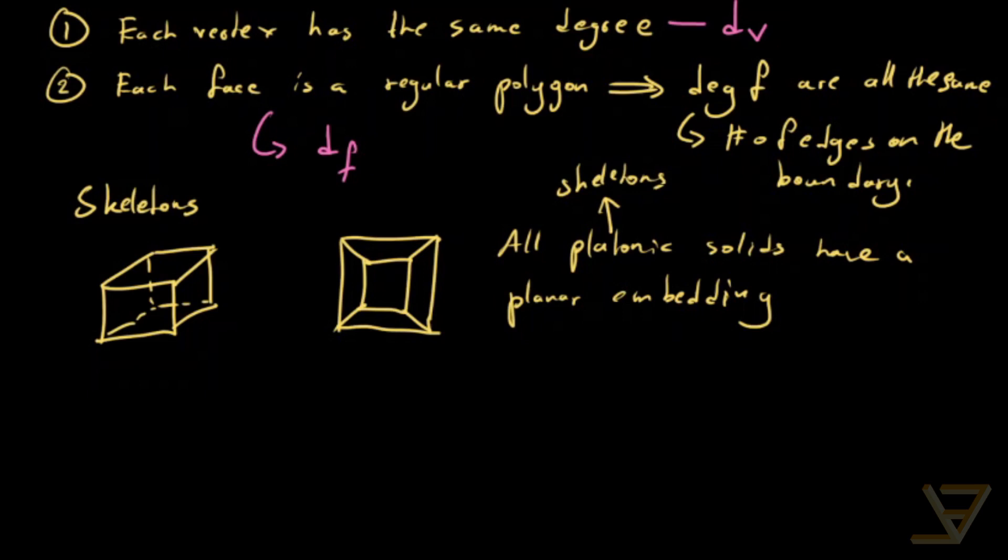So now that we can assume that, we can use the power of planar graphs. And in particular, we're going to use the Euler characteristic of planar graphs. First of all, we're going to look at this sum, which is the sum of the degrees of the vertices, V as in capital V.